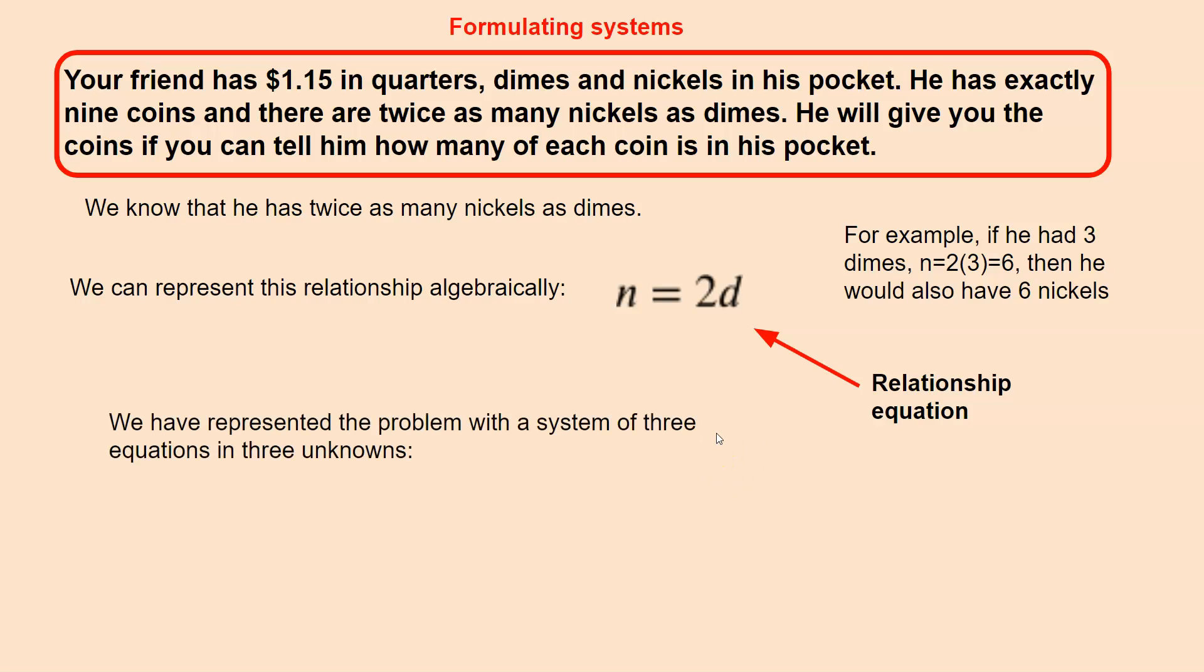So we have written three equations. We represent this problem with a system. We'll call it a system of three equations and three unknowns. You need three equations solved at the same time, simultaneously, in order to solve this problem.